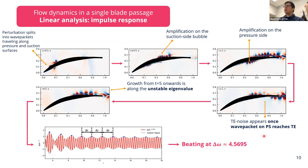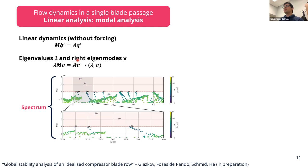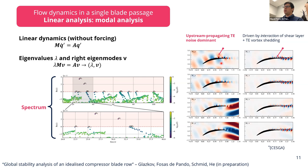Some characteristics of the impulse response can be analyzed from a modal point of view by looking at the eigenvalues and eigenmodes of the operator. In the spectrum we observe two unstable modes and some modes close to neutrality. These structures correspond reasonably well with structures seen in both the impulse response and the Fourier analysis of the nonlinear flow field. The low-frequency modulation is related to two eigenmodes that are very close in frequency and have a similar spatial structure — the right column shows the horizontal velocity perturbation and the left column shows the pressure.